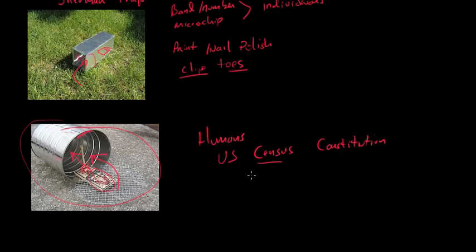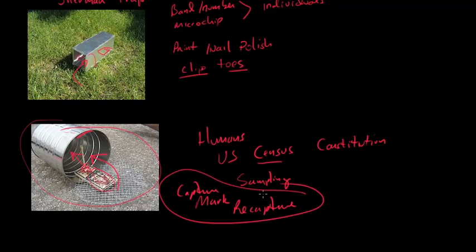Now a lot of people would say that we would actually be better off to do something that is more of a sampling method, which this, of course, is a sampling method. Now, I want you to think about, would we use capture, mark, and recapture for a methodology of doing a sampling of the human population in the United States?